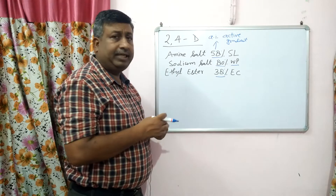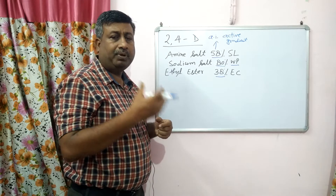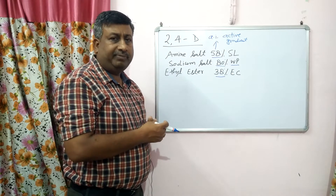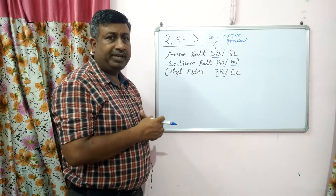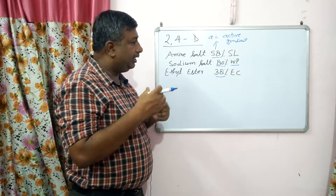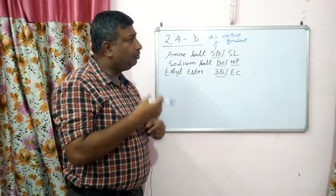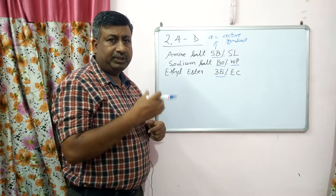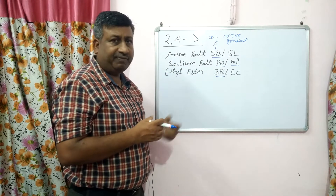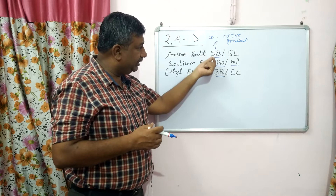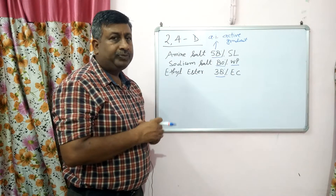So there are 3 types of salts and these are used to control broad leaf weeds. These 2,4-D salts are very common. The important question is how to calculate the dose of 2,4-D, because the formulations are different and the active ingredient percentages are different, so the dose is not the same.